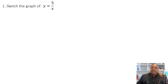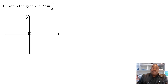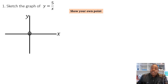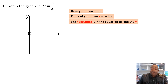Let's sketch the graph y = 5/x. Clearly the graph is at its original position — there's no value for q, so q = 0. The value of 'a' is positive five, so the curves will appear in the first and third quadrants. When sketching a graph that hasn't shifted, you need to show your own point by choosing an x-value to substitute into the equation. Let's use x = 1.